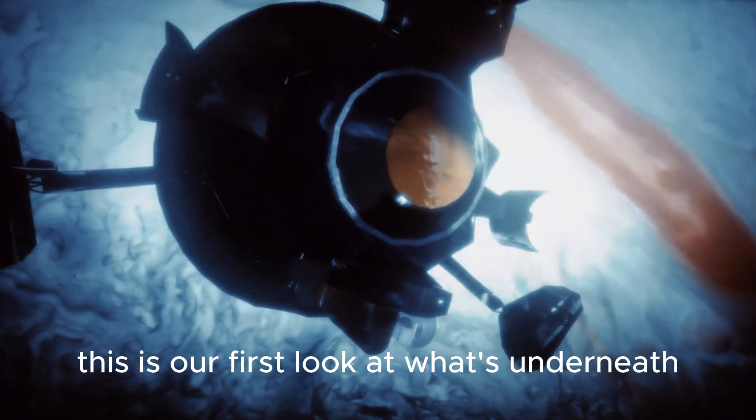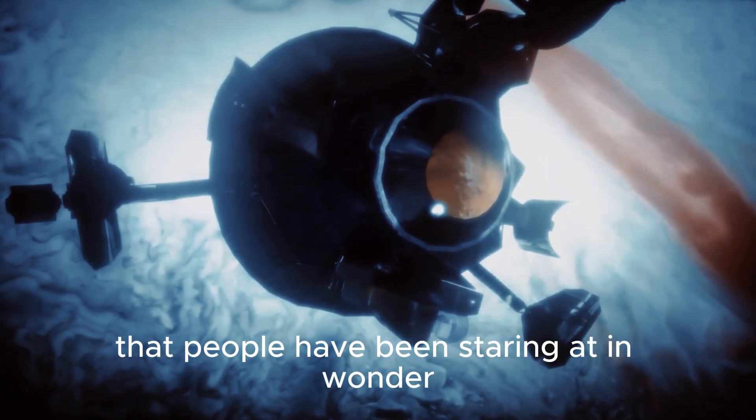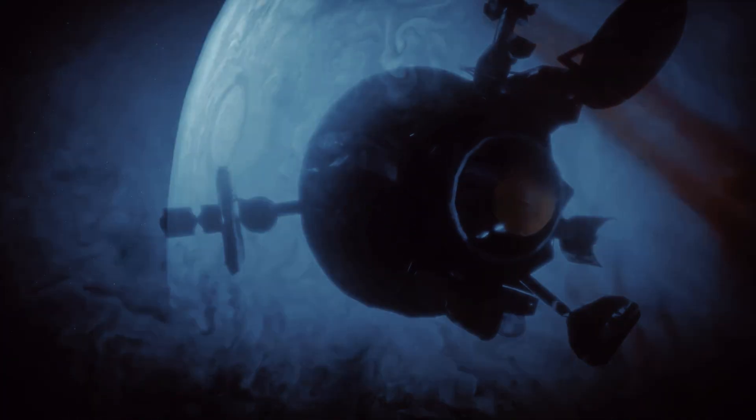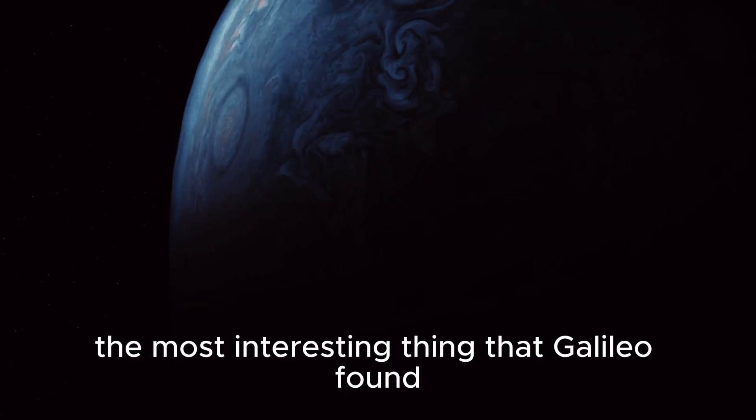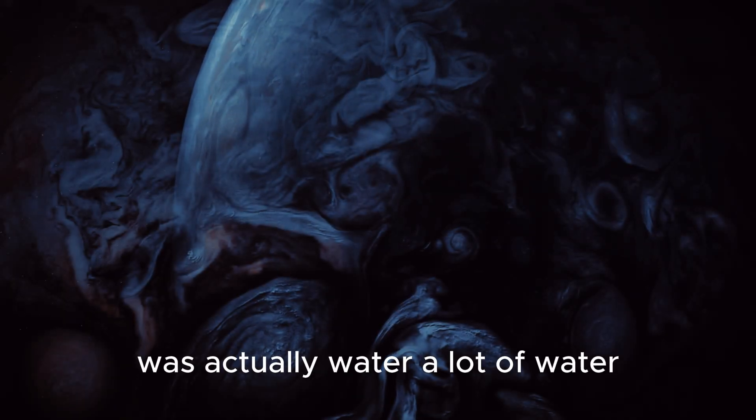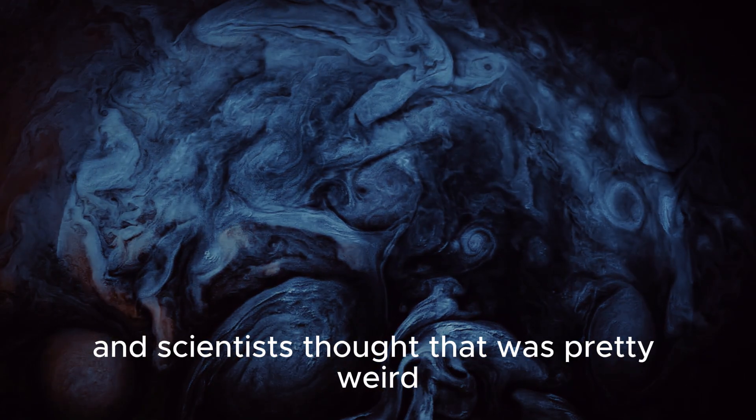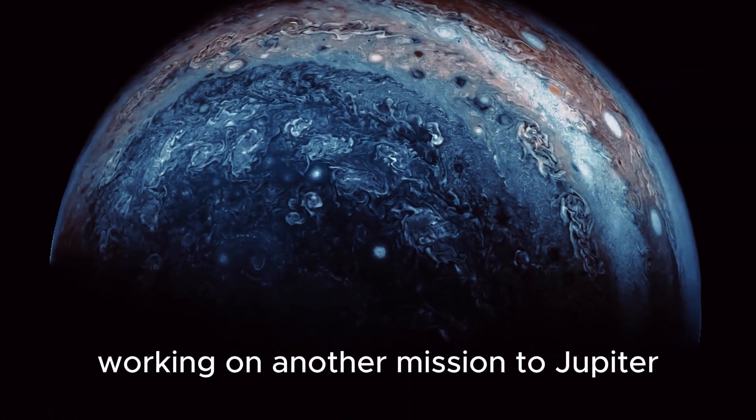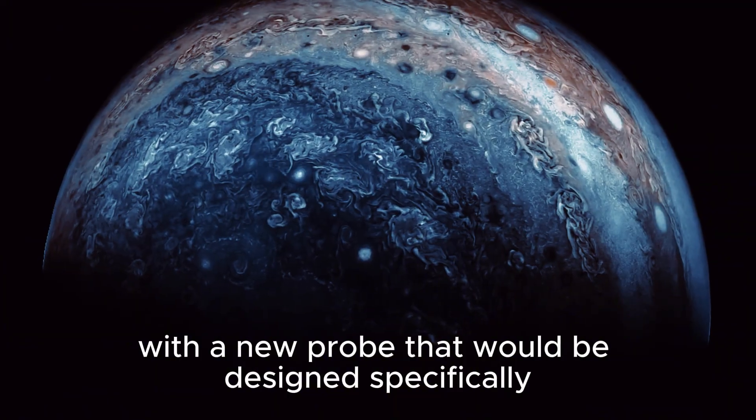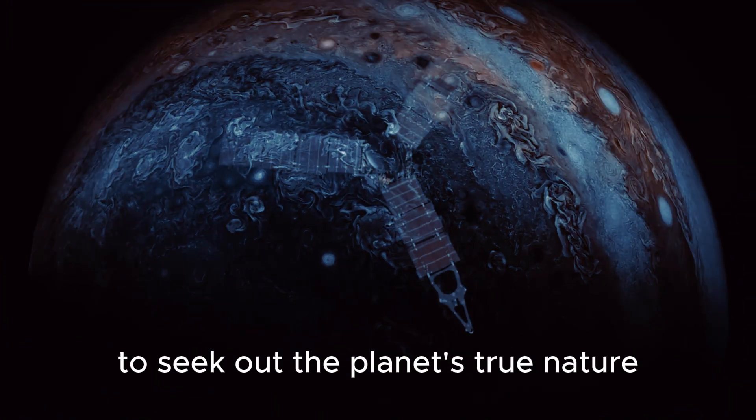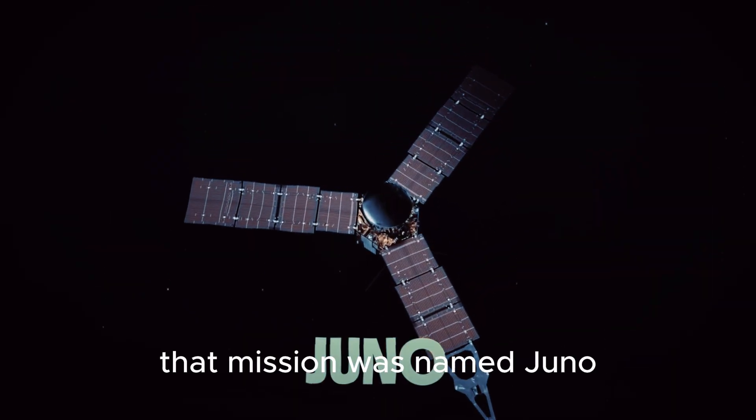This is our first look at what's underneath the cloud layer that people have been staring at in wonder for hundreds of years. The most interesting thing that Galileo found was actually water. A lot of water. And scientists thought that was pretty weird. Weird enough that they started working on another mission to Jupiter with a new probe that would be designed specifically to seek out the planet's true nature. That mission was named Juno.